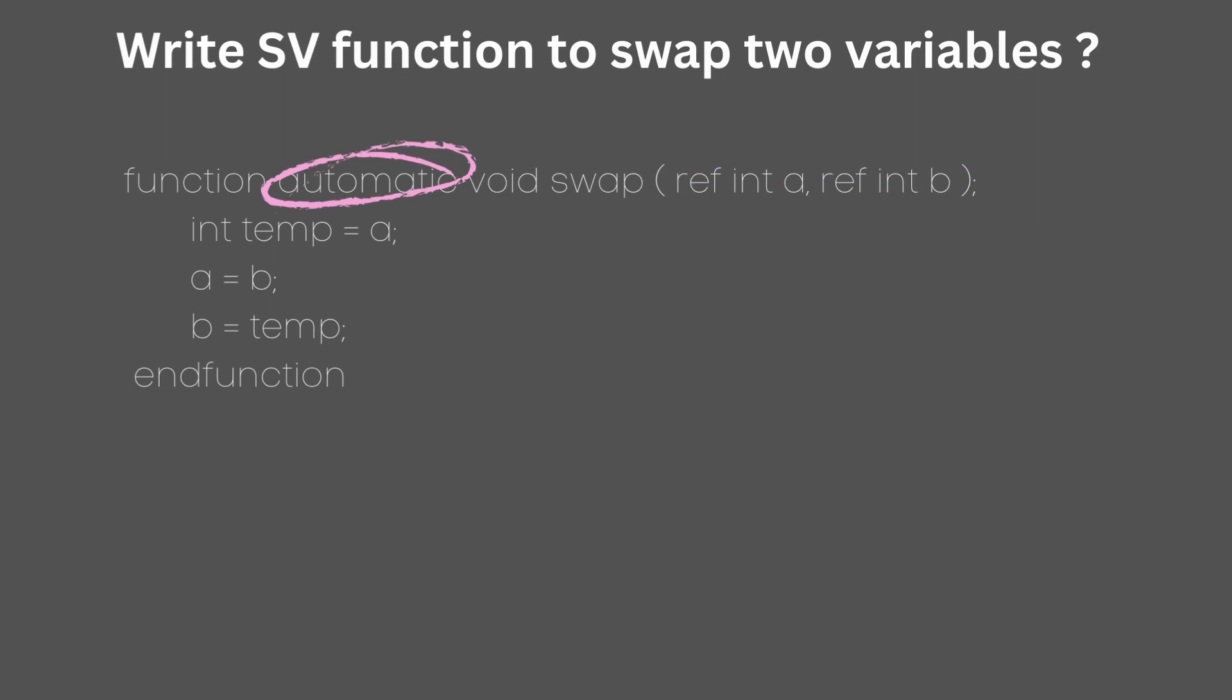The function needs to be automatic. This is because we can only pass parameters by references to the function that we have declared as automatic.